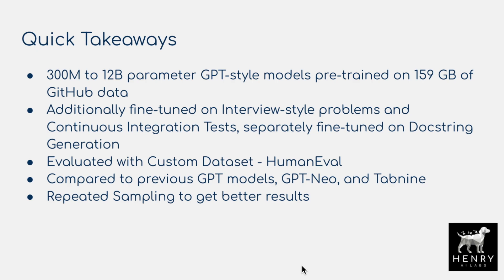They train different scales going from 300 million parameters up to a pretty large 12 billion parameter model — about the size of the T5 model, not quite GPT-3 scale, but still massive. It's pre-trained on 159 gigabytes of GitHub data. Later in the video we'll take apart exactly how big 159 gigabytes of code data really is.